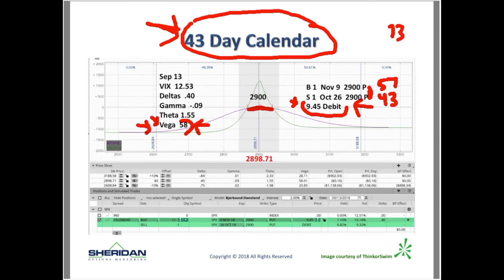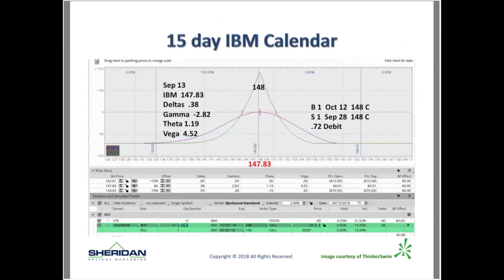If VIX were at 20, I'd have no problem doing a calendar. If VIX were at 30, I wouldn't hesitate — I could just put my long seven days past my short and I'm not concerned. That's another thing we'll talk about in the class.